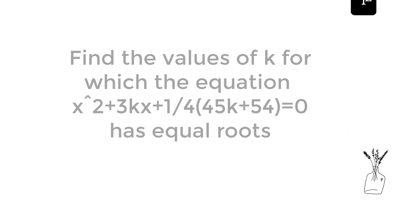Find the values of k for which the equation x squared plus 3kx plus one-fourth times (45k plus 54) equals zero has equal roots.